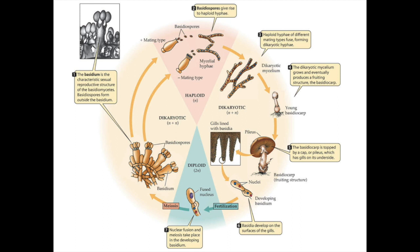Two haploid hyphae from different mating types then sense each other, grow towards each other, and then undergo plasmogamy, where the two mating types fuse and form a dicharyotic hyphae.